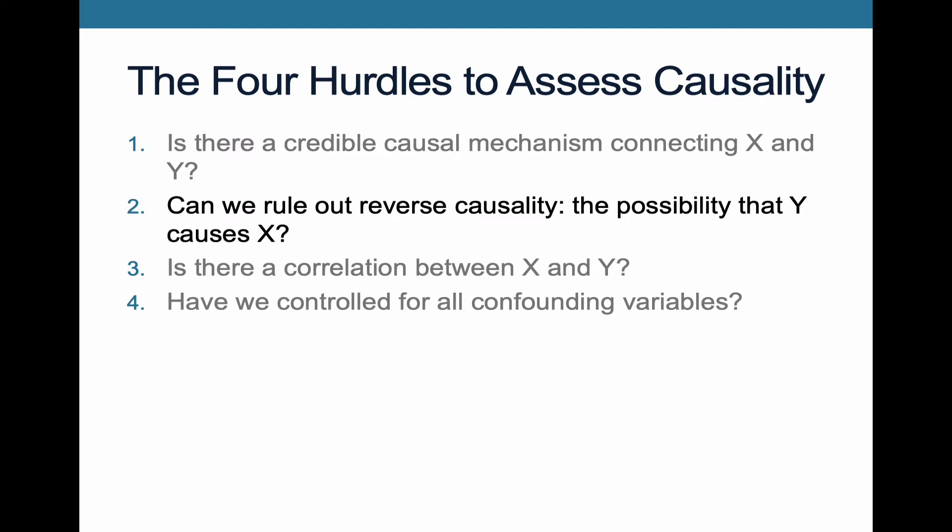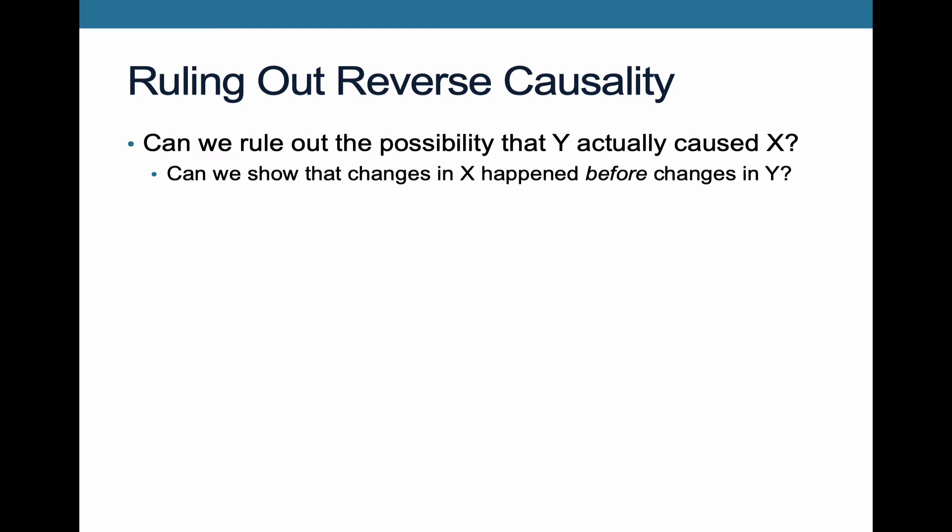To be able to rule out reverse causality, what do we have to do? Well, first we need to ask ourselves: can we show that changes in x happen before the changes in y? In other words, can we show that there's a temporal sequencing where your cause precedes your effect? If you can't show that, then it raises questions about which came first — chicken or the egg.